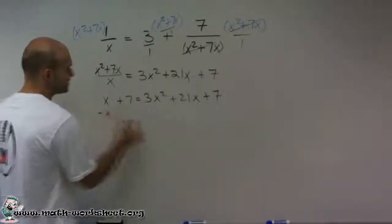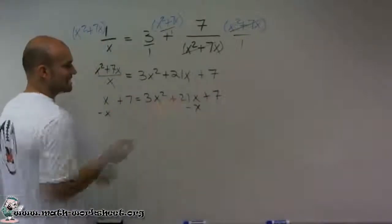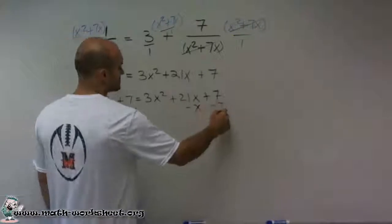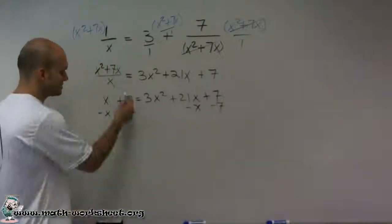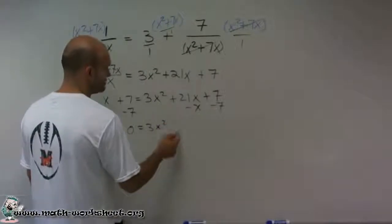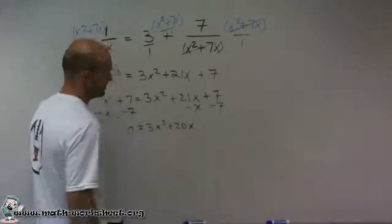So I'm going to get rid of the x over here. And remember, I can only subtract the x from the 21x, and then 7 from the 7, because those are both like terms. So now let's get to zero equals 3x squared plus 20x.